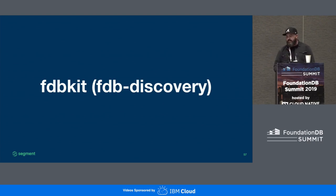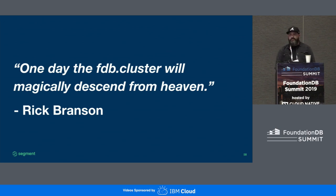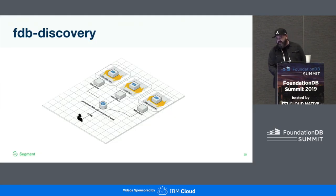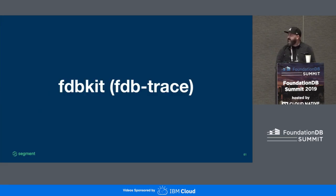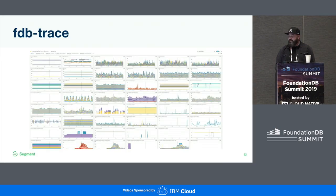We have a few services that support the system running on ECS or any container orchestration system. The first one is FDB Discovery — a small service that runs on all the clusters, fronted by a load balancer. You can curl that service and basically get back the FDB cluster config, pop it in fdb.cluster, and add your node to the cluster. We have a process called FDB Trace that basically parses all the trace log files and converts them to metrics, and we feed those into Datadog today.